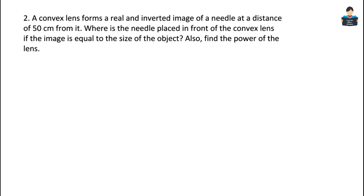Question number 2: A convex lens forms a real and inverted image of a needle at a distance of 50 cm from it, where the image is the same size as the object. We need to find the object distance, that is the u value.